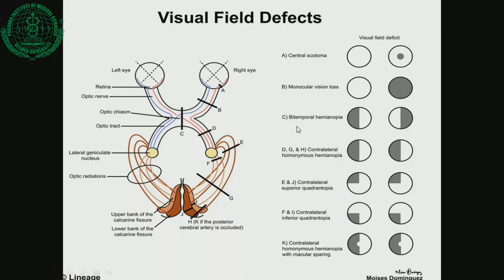Damage at point C, which is at the optic chiasma, results in bitemporal hemianopia. When there is damage at points D, G, and H - corresponding to the optic tract, optic radiation, and near optic radiation respectively - there is seen contralateral homonymous hemianopia. When there is damage at points E and J, there is contralateral superior quadrantanopia. Damage at points F and I results in contralateral inferior quadrantanopia. Damage at point K results in contralateral homonymous hemianopia with macular sparing.